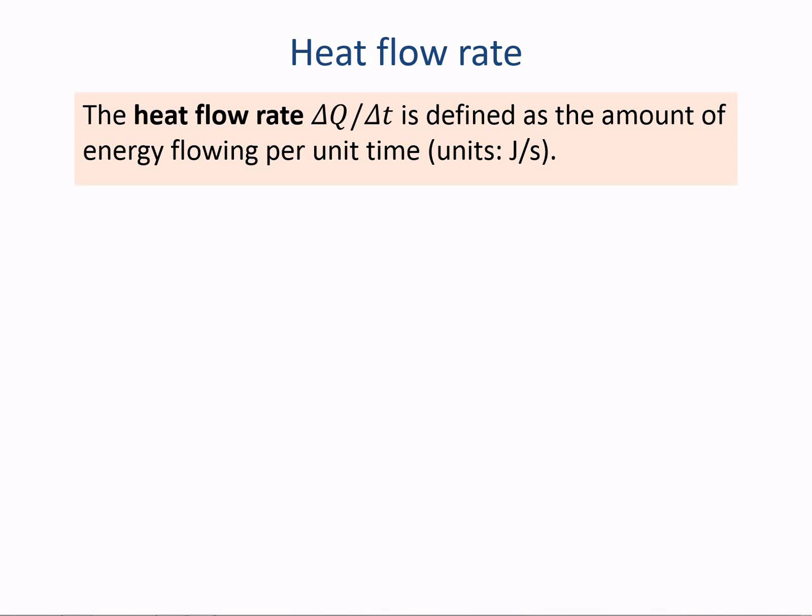For example, you could take a metal rod of a certain length and width and you could keep the ends of the metal rod at two different temperatures, say T high and T low. You will observe heat flowing from the hot end to the cold end at a certain rate. Say you measure the amount of heat that flows in 10 seconds. You could compare that with a rod made of the same material but with wider cross-section between the same temperatures, T high and T low. You will observe that more heat flows in the same amount of time in the wider rod than it does in the narrower rod.